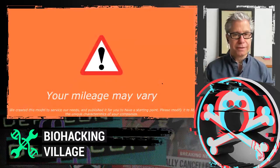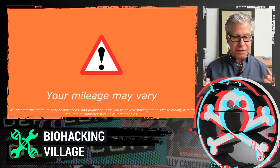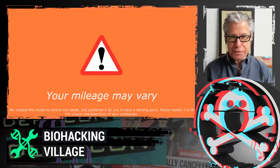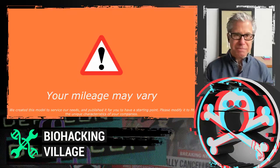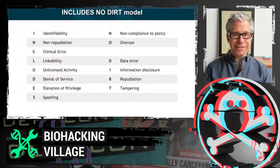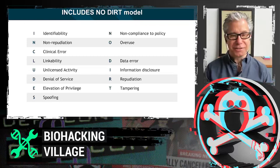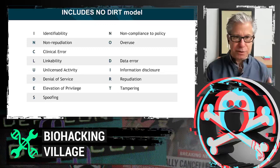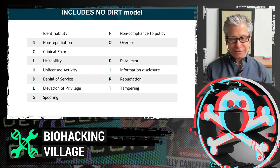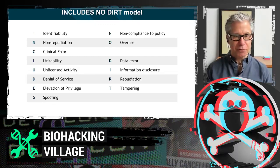At long last — the Includes No Dirt model. It has been arranged to be memorable. The elements are: Identifiability, Non-repudiation, Clinical Error, Linkability, Unlicensed Activity, Denial of Service, Elevation of Privilege, Spoofing, Non-compliance to Policy, Overuse — specifically overuse of information and data as pertains to the HIPAA space — Data Error, Information Disclosure, Repudiation, and Tampering. All those parts play together to make the model we're using.